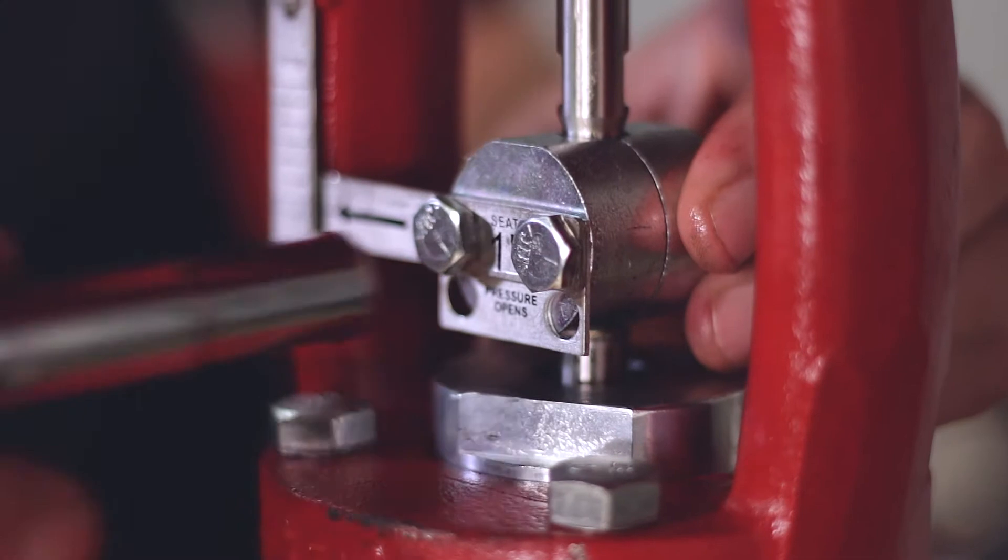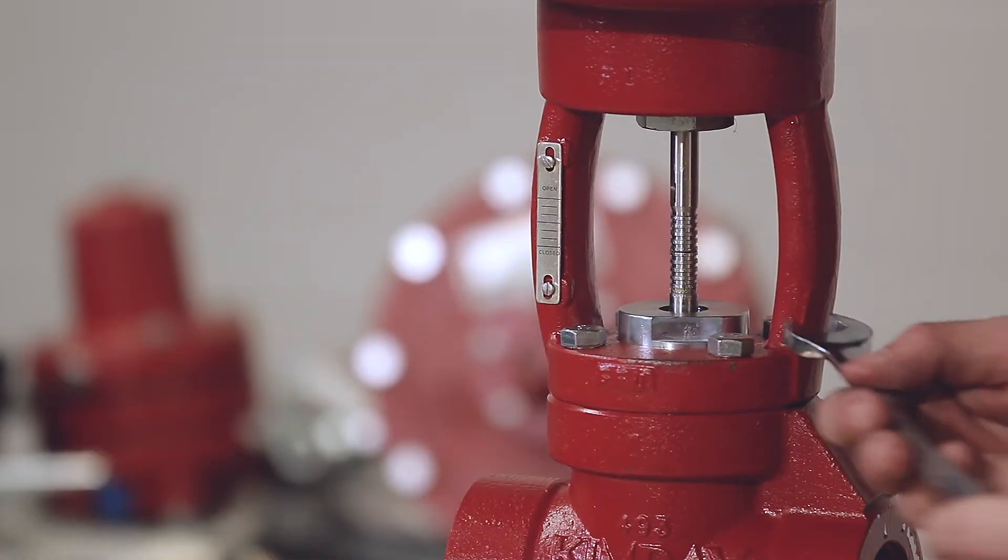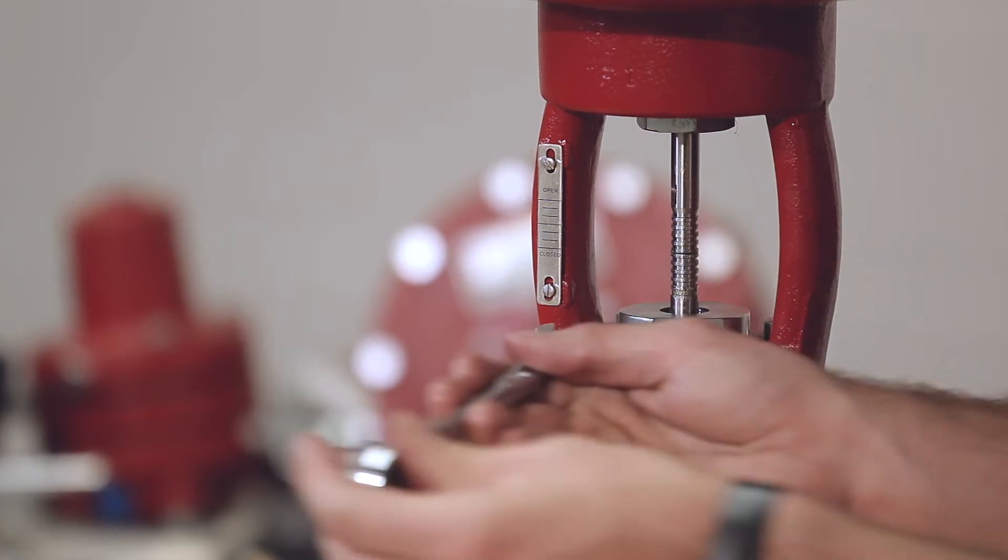Loosen your coupling block bolts and remove your coupling block. After that, you'll remove the four bolts from your yoke base and empty all of the oil out of your yoke.